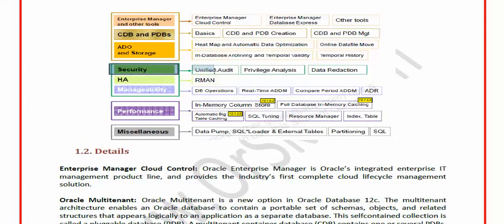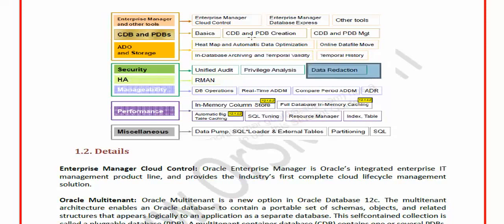Next is Security. We have unified auditing — auditing is a monitoring utility pre-installed in Oracle, enabling auditing at tablespace, user, and transaction level, including fine-grained auditing. New unified auditing features added in 12c will be covered. We'll also see how to control and analyze privileges — in 12c we have global privileges (applicable to all databases on the instance) and local privileges (applicable only to the connected database). Data Redaction is another new security feature also covered in this course.